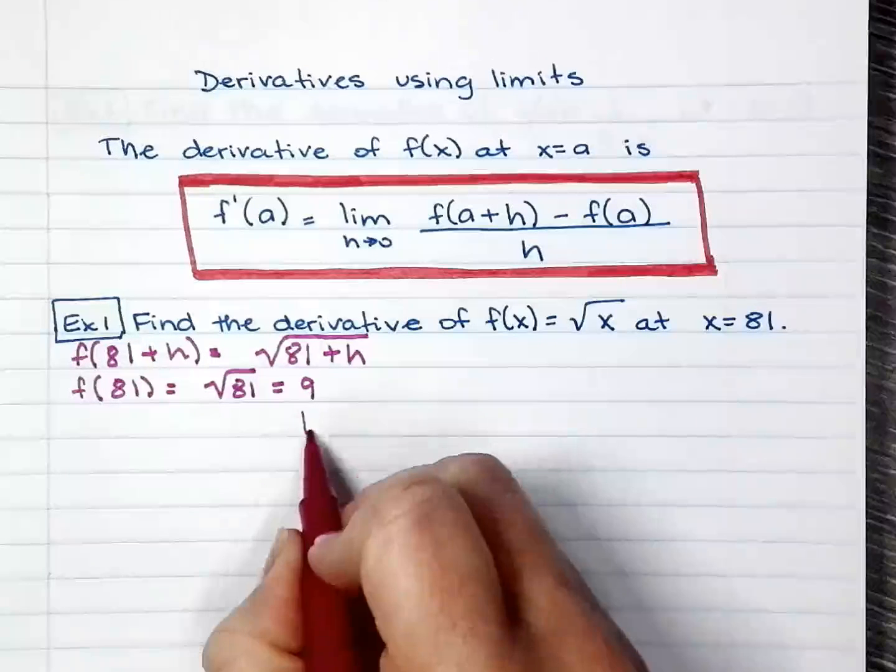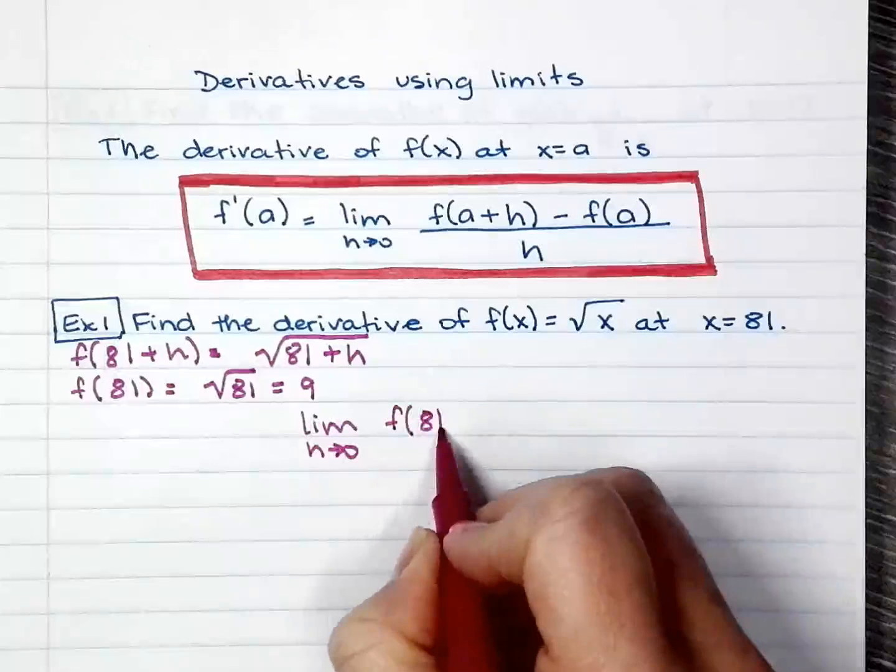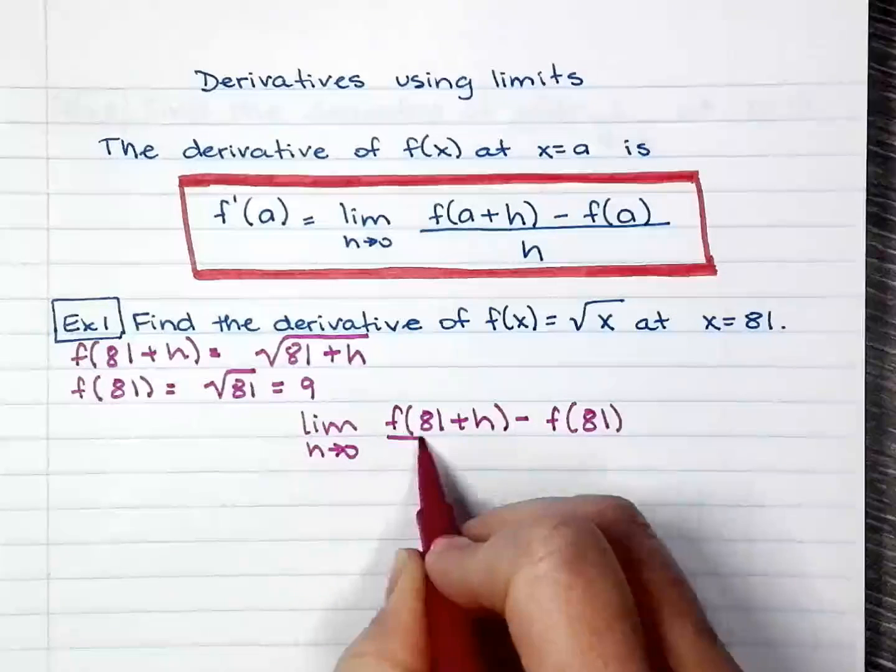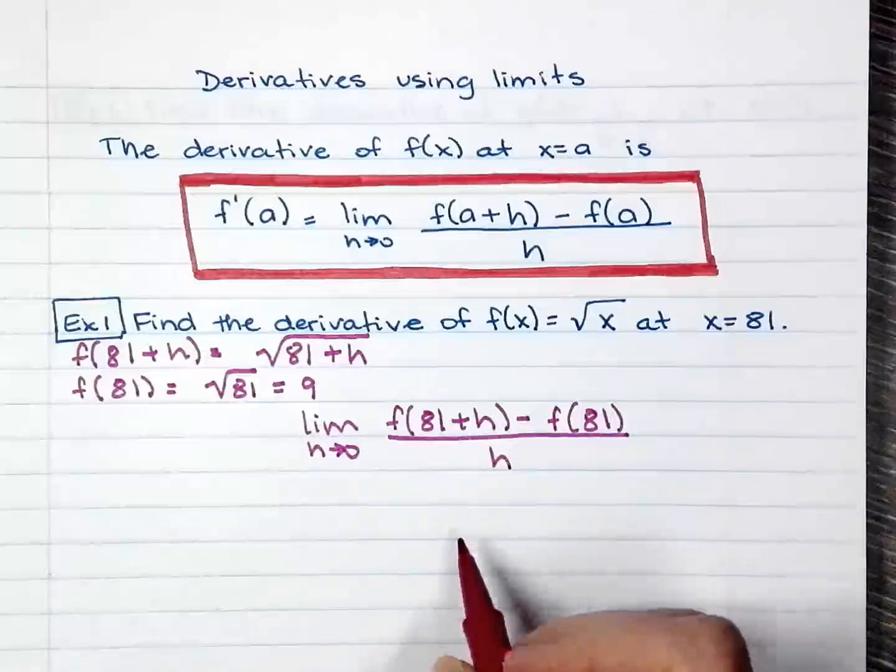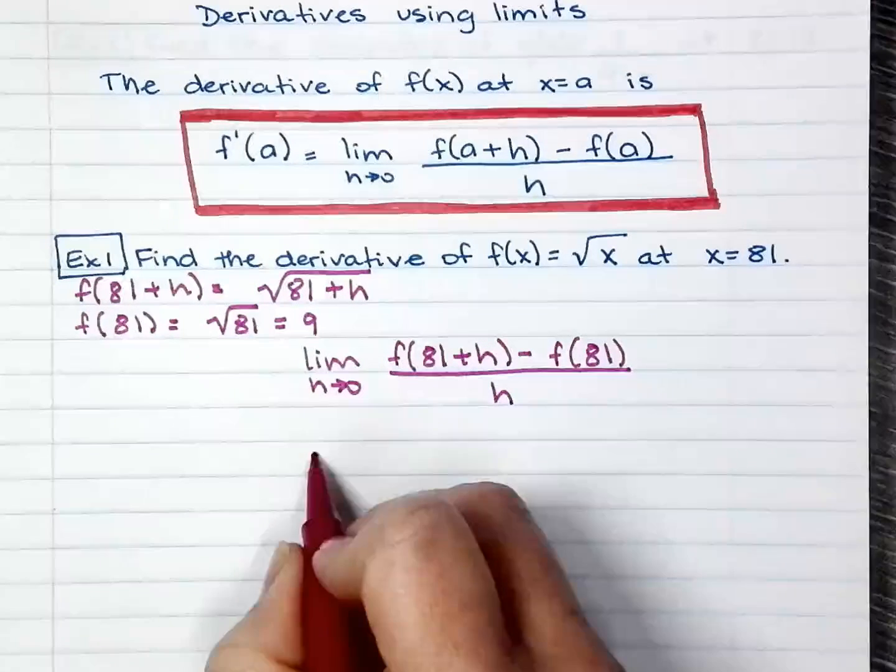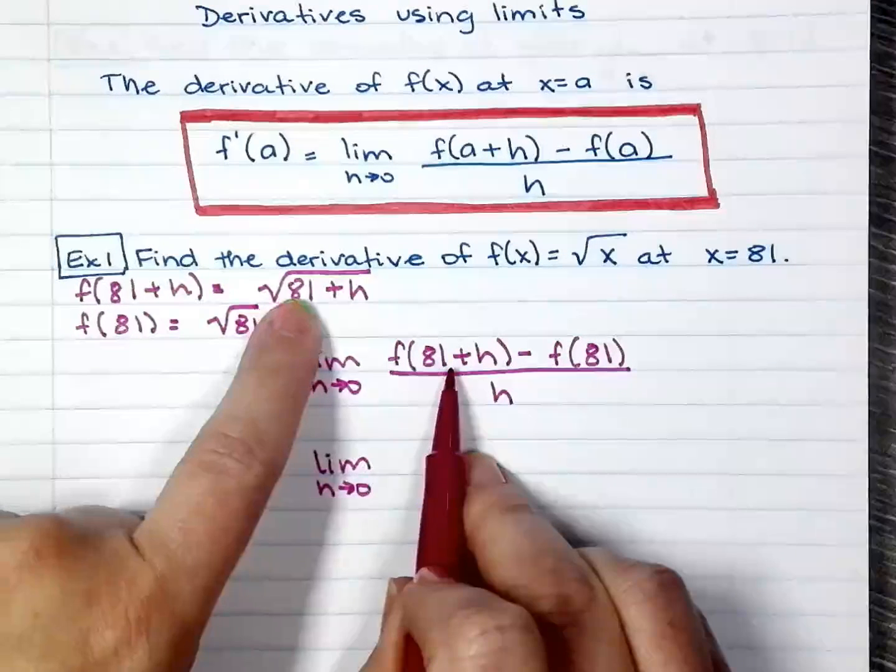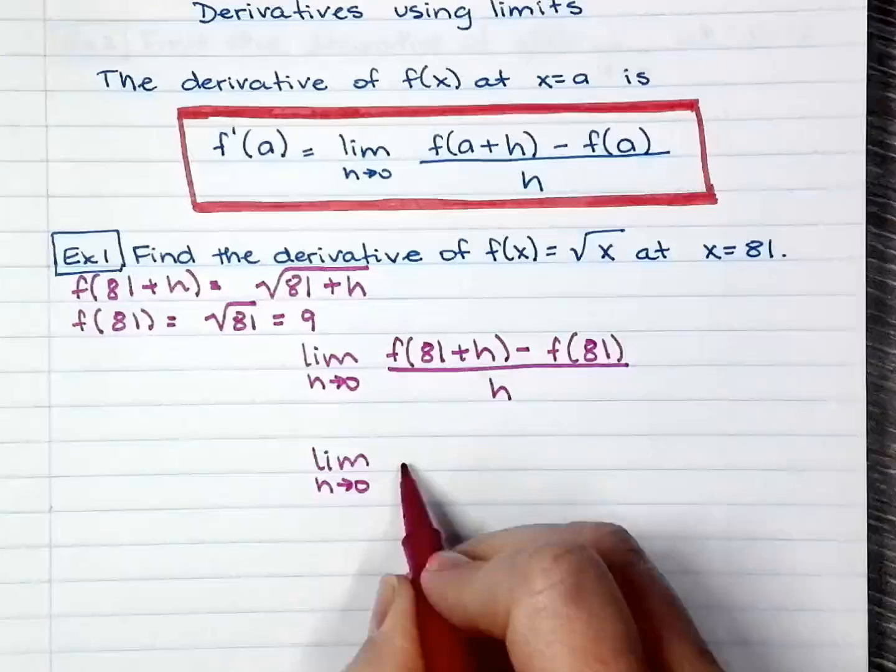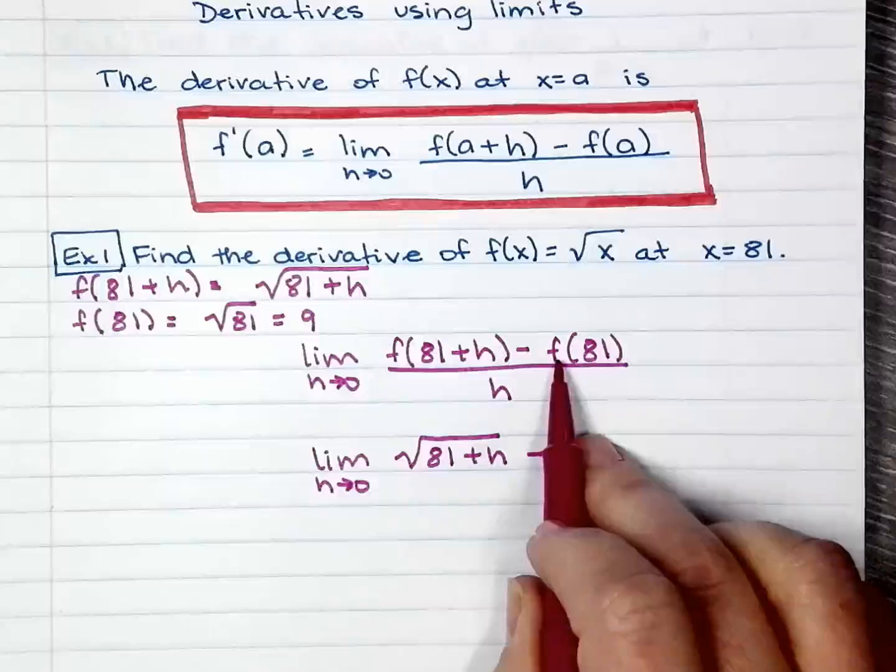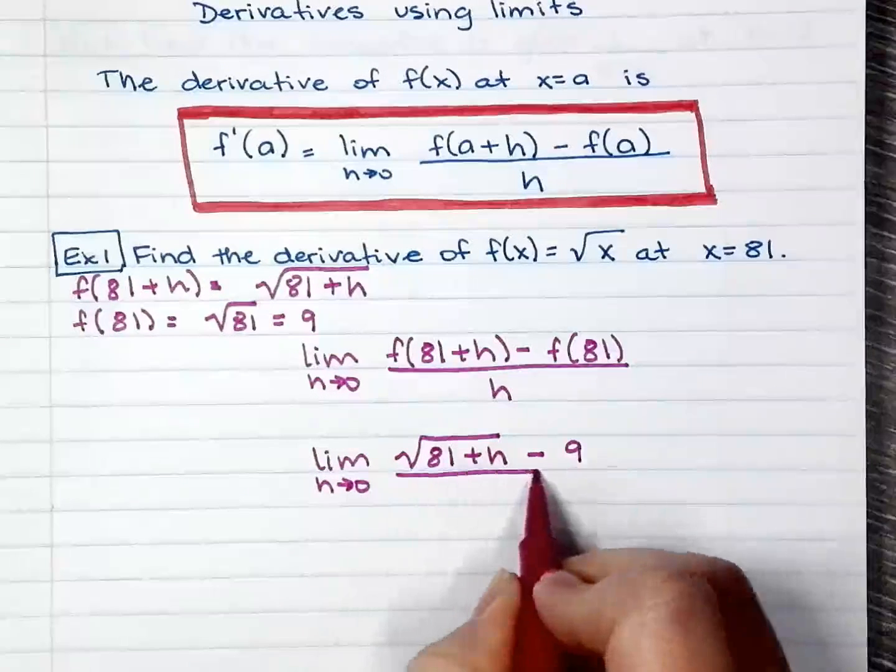So I have the limit as h approaches 0 of f(81+h) minus f(81) everything over h. So since we already have that we're going to go ahead and substitute that. So right here I have √(81+h) minus f(81) is 9, everything over h.